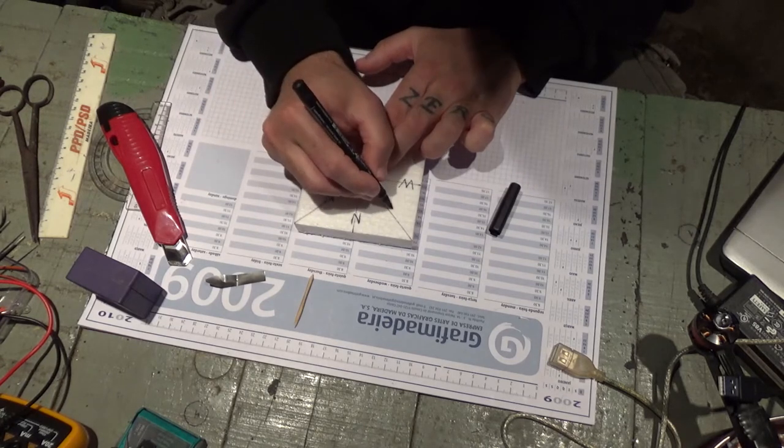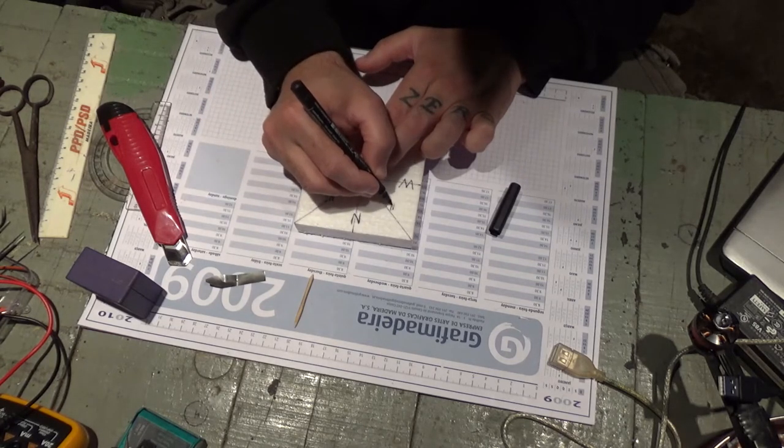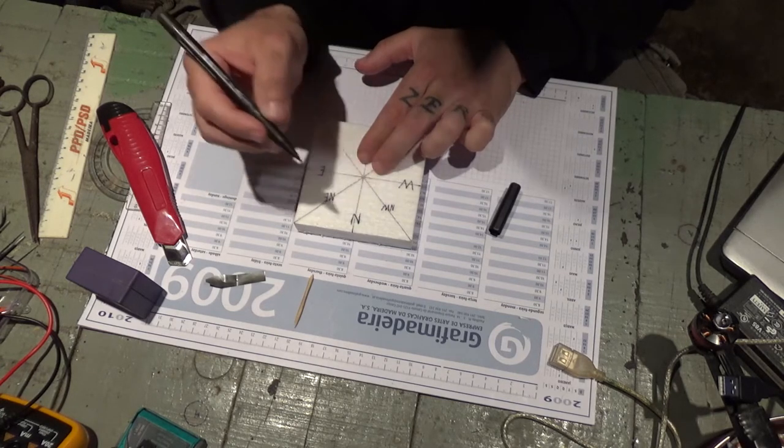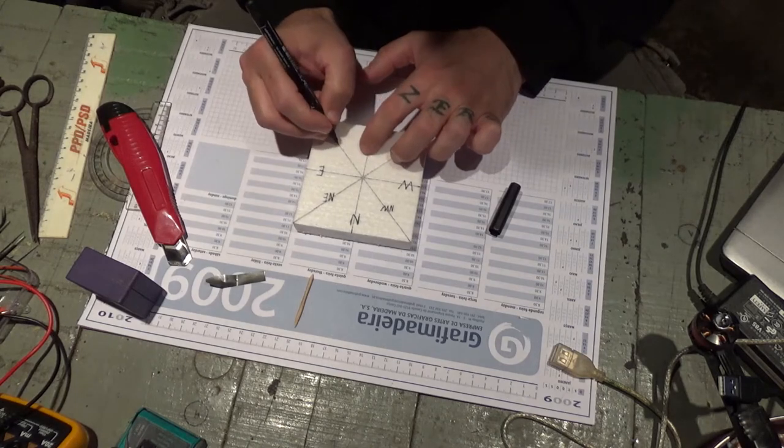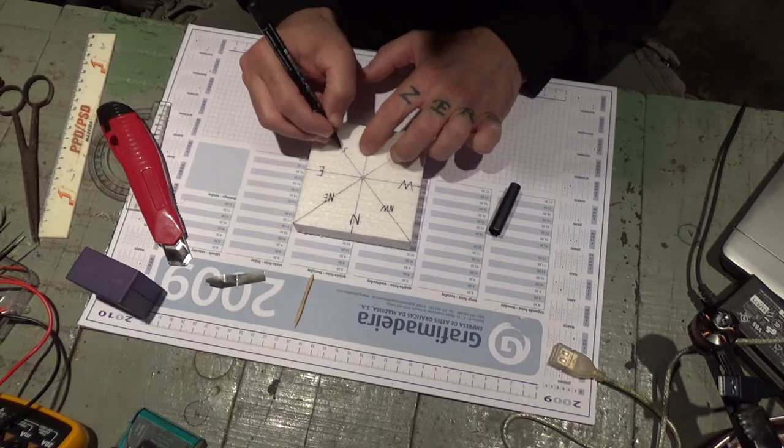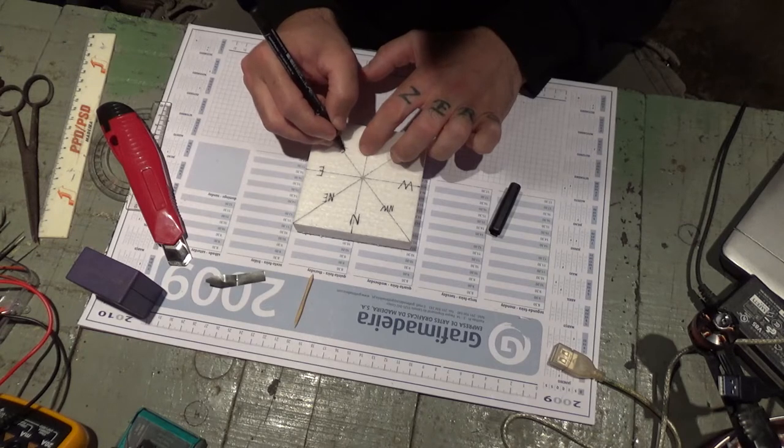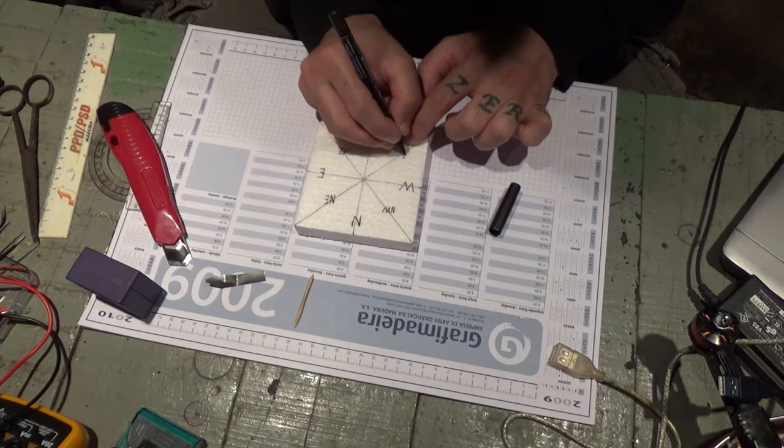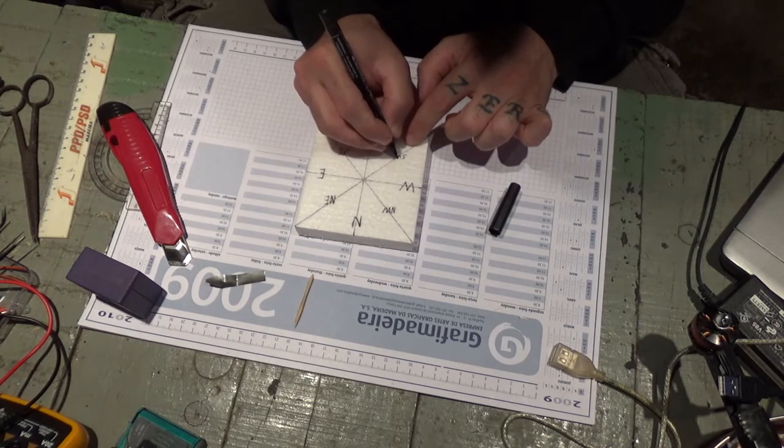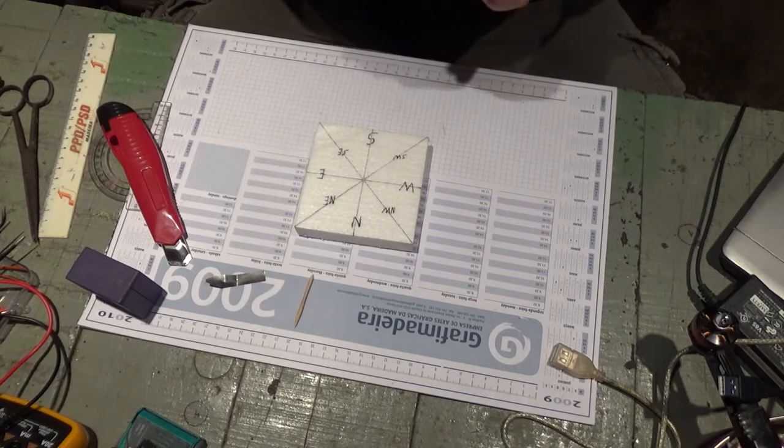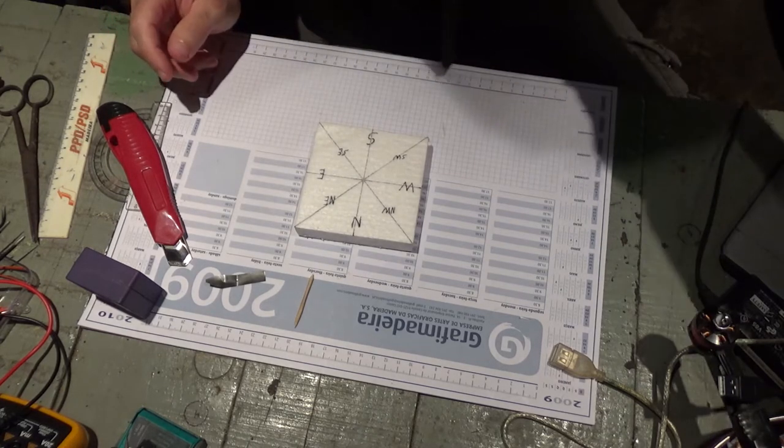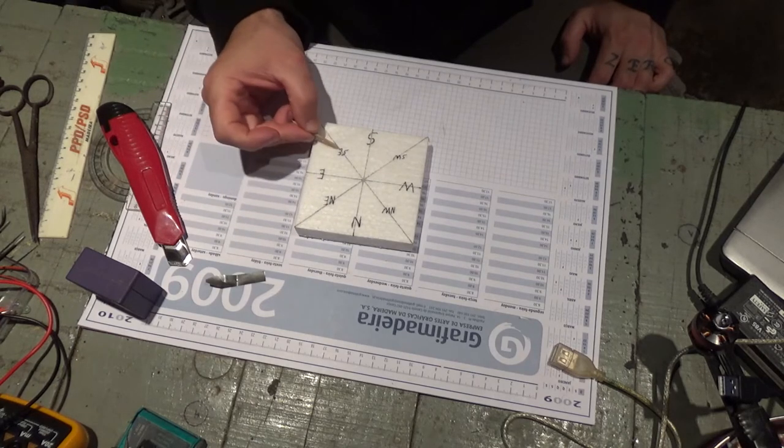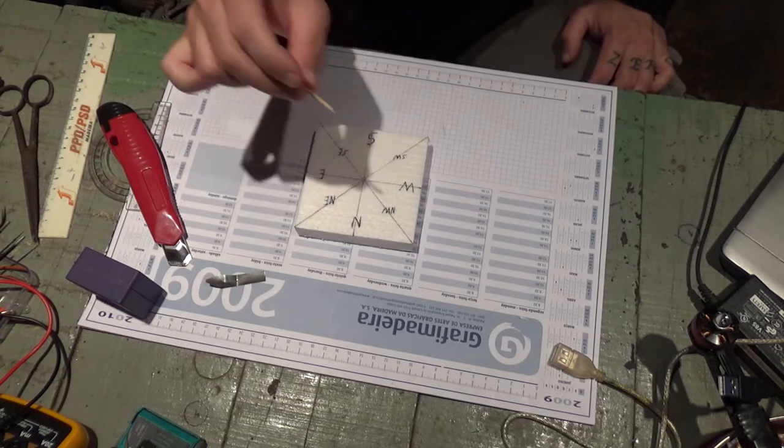This side here, northwest. This side down here, southeast. And this side, southwest. Okay, I got everything written. North, south, east, west, northeast, southeast, southwest, northwest.